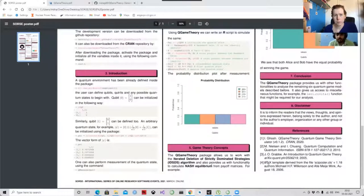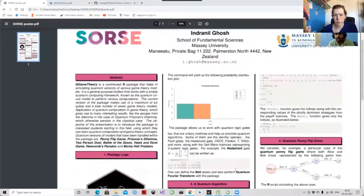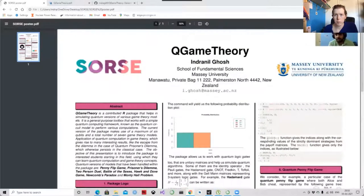You can also work with simple game theory concepts called IDSDS algorithm or the Nash equilibrium for payoff matrices and implement them using functions from this package called IDSDS function or the Nash function.